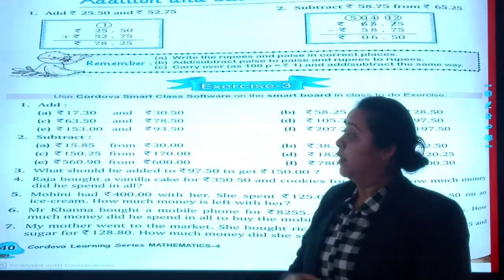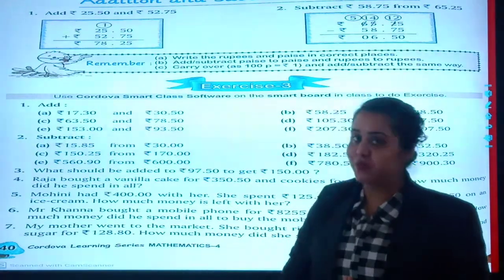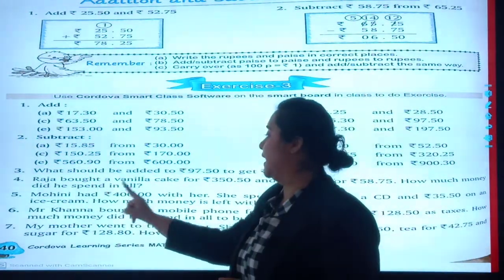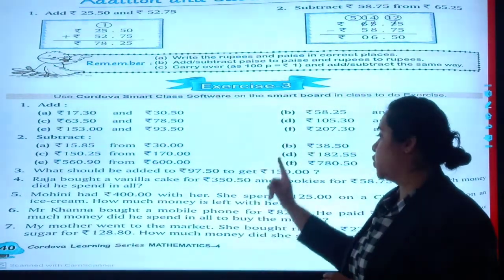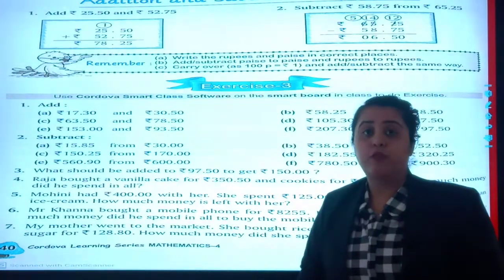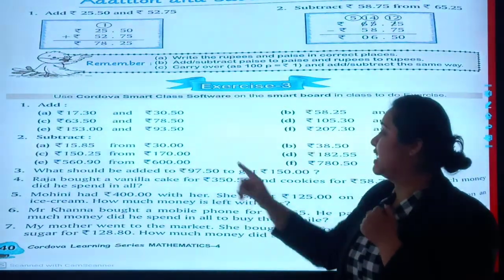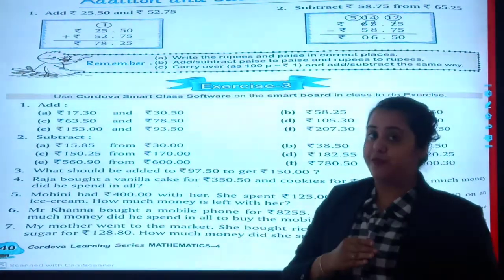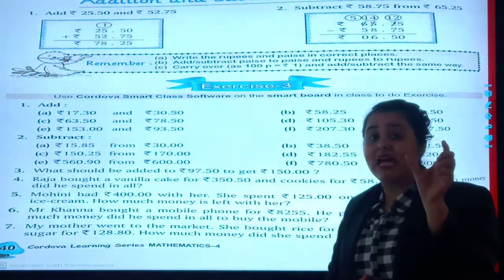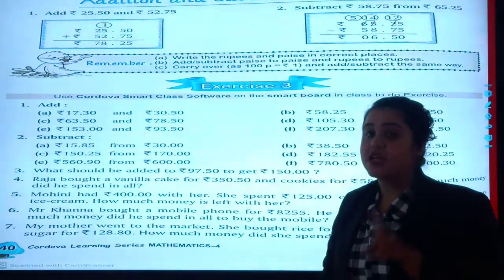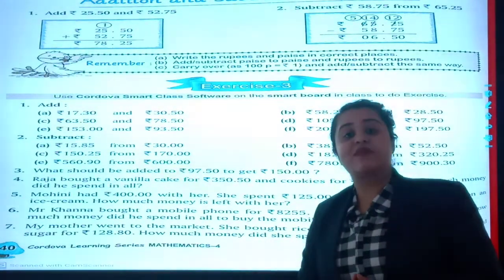Okay students, so this is your exercise. Your question number 1, question number 2, you will be able to solve. We will be discussing question number 3. What should be added to rupees 97 and 50 paise to get rupees 150? What should be added to get 150? I already have 97 rupees. I need to make it 150. So I am going to do minus. Then I will know how much remaining amount I have to add. So in this you will be doing subtraction: 150 minus 97 rupees and 50 paise.